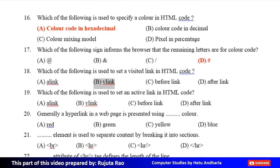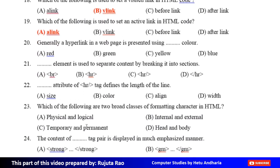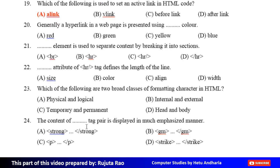Nineteenth MCQ: Which of the following is used to set an active link? Option A: Alink, Option B: Vlink, Option C: Before link, Option D: After link. The correct answer is Option A, Alink. Twentieth MCQ: Generally a hyperlink in a web page is presented using dash color. Option A: Red, Option B: Green, Option C: Yellow, Option D: Blue. The correct answer is Option D, Blue.